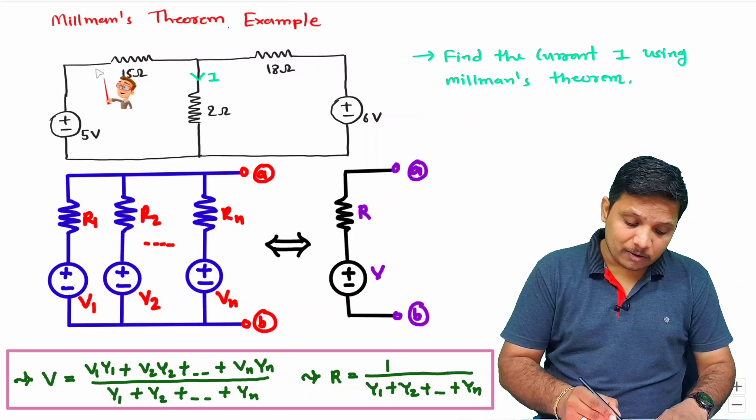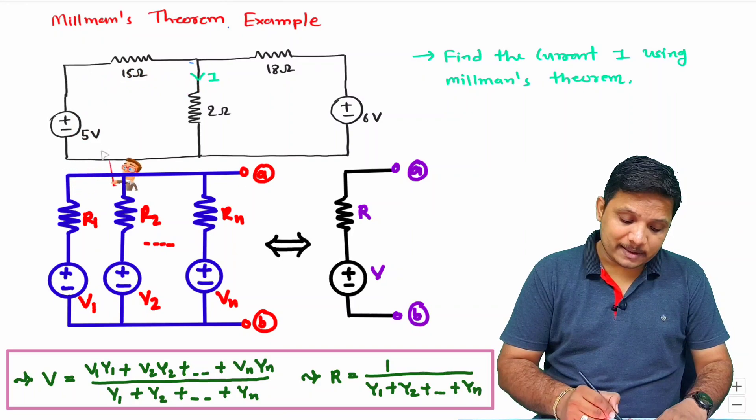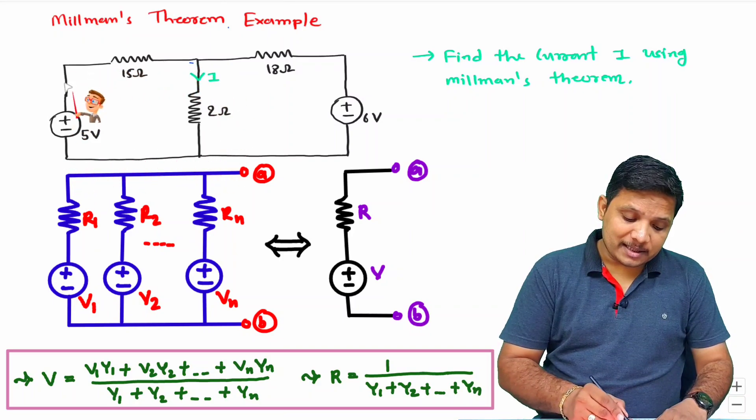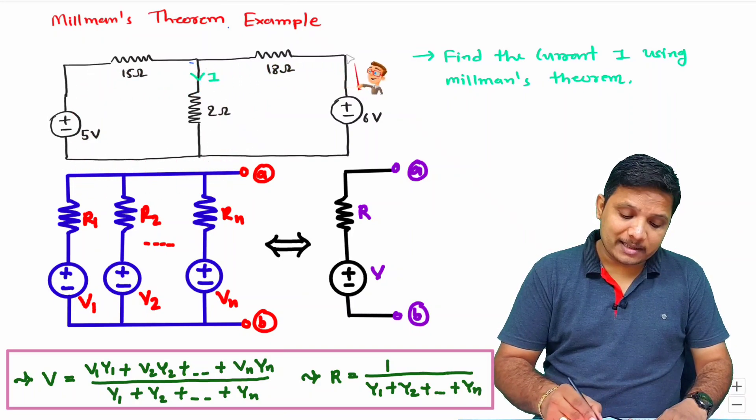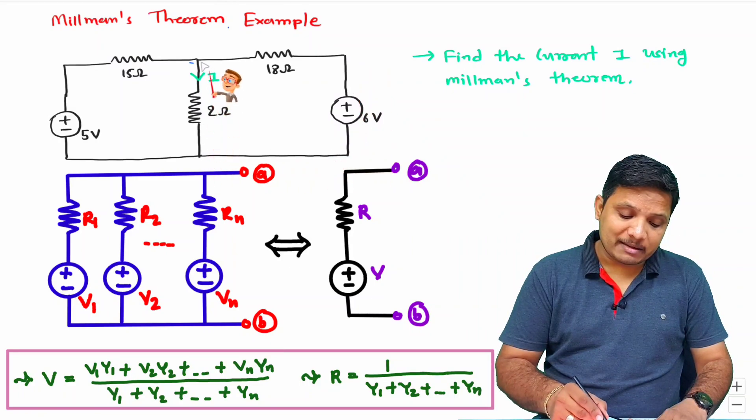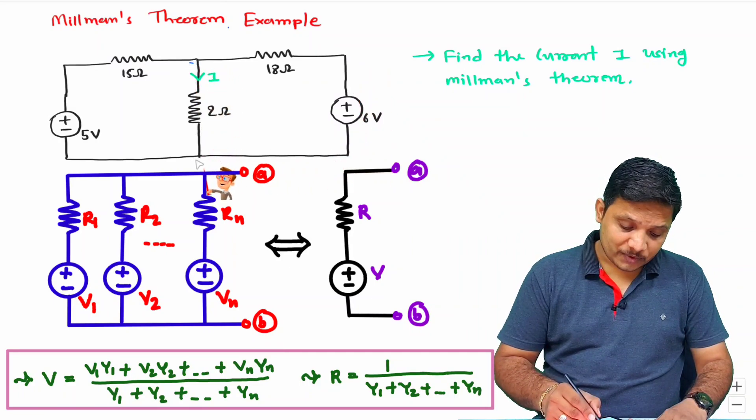Now if you observe, this circuit is similar to this, where this resistance and voltage source and this resistance and voltage source are in parallel to each other.